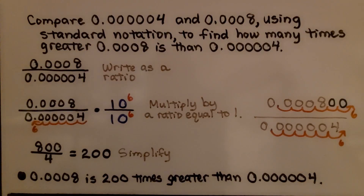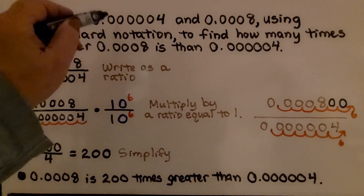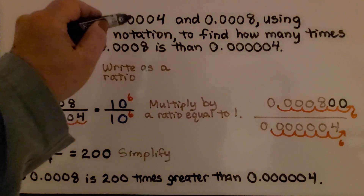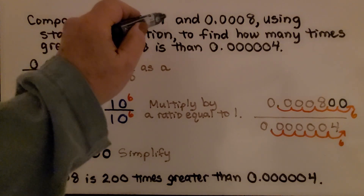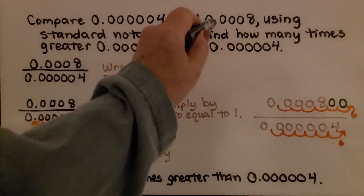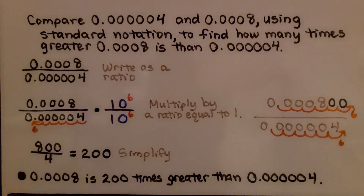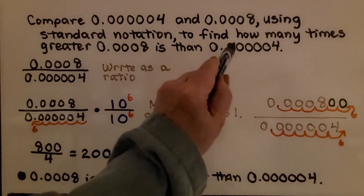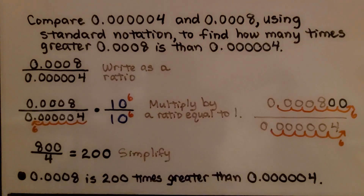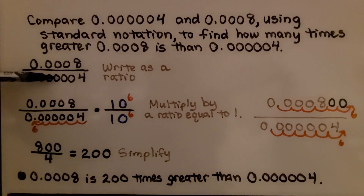Here it's telling us to compare 0.00004 and 0.0008 using standard notation to find how many times greater 0.0008 is than 0.00004. The first thing we do is write it as a ratio, and we write greater to lesser.